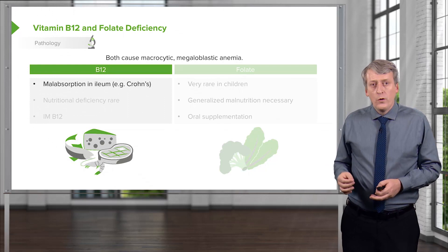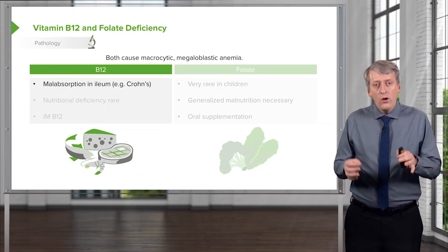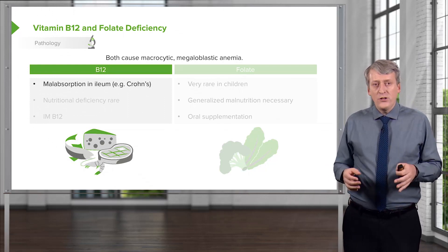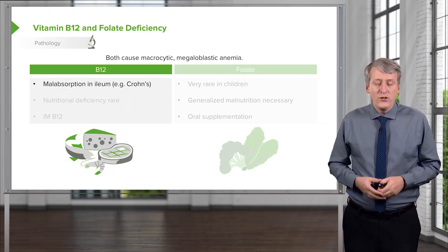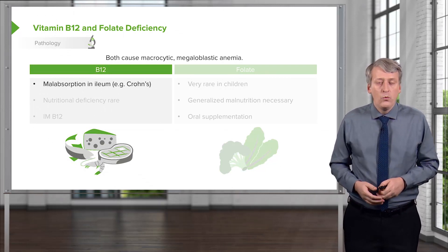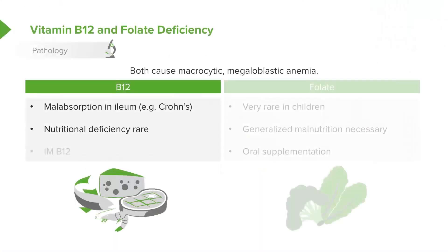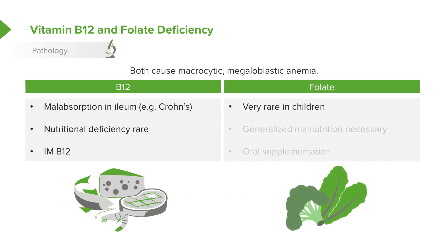B12 is absorbed in the ileum, so we also see this problem in patients with ileal inflammation — the classic example being a Crohn's patient. Nutritional deficiency of B12 is rare; we treat these patients with intramuscular vitamin B12. Folate deficiency is very rare in children and generally associated with generalized malnutrition; we use oral folate supplementation.